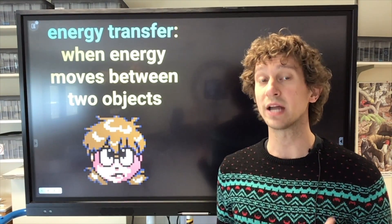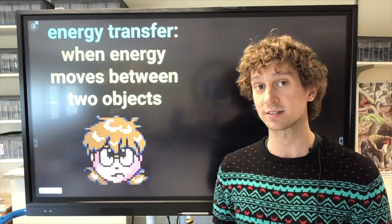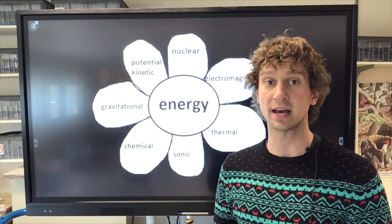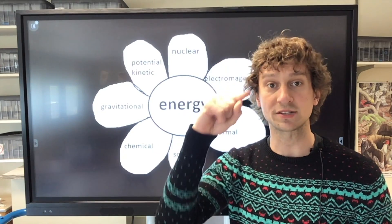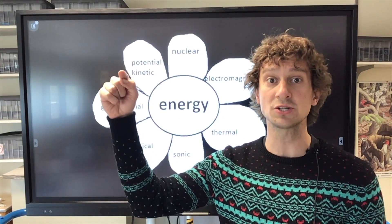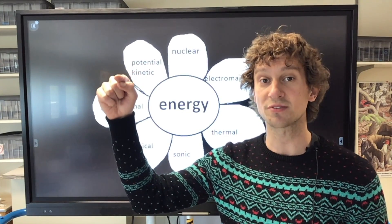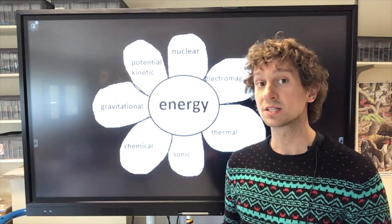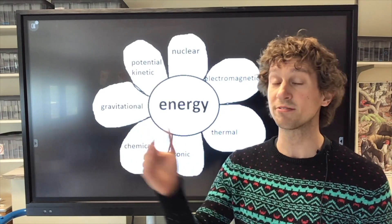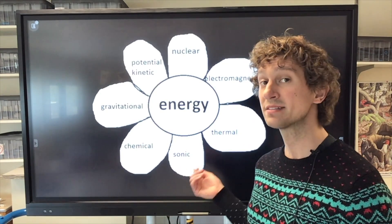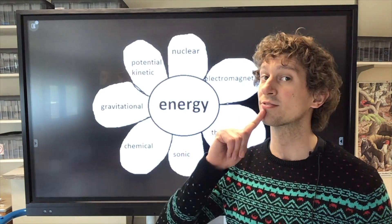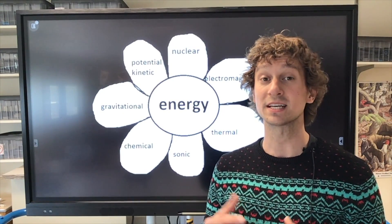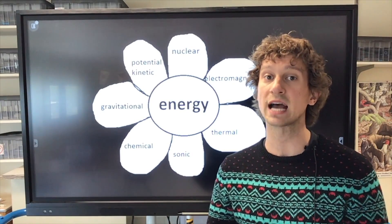Energy transfer is when energy moves between two objects and stays the same kind of energy. For example, on a swing set you transfer kinetic energy — the energy of motion — to potential energy based on your position, and then transfer that back into kinetic energy. Similarly, when sound bounces off an object and you hear an echo, it remains as sonic energy but gets transferred from someone's voice off the wall into someone else's ear. Anytime we hear something, that's a transfer of sonic or sound energy.